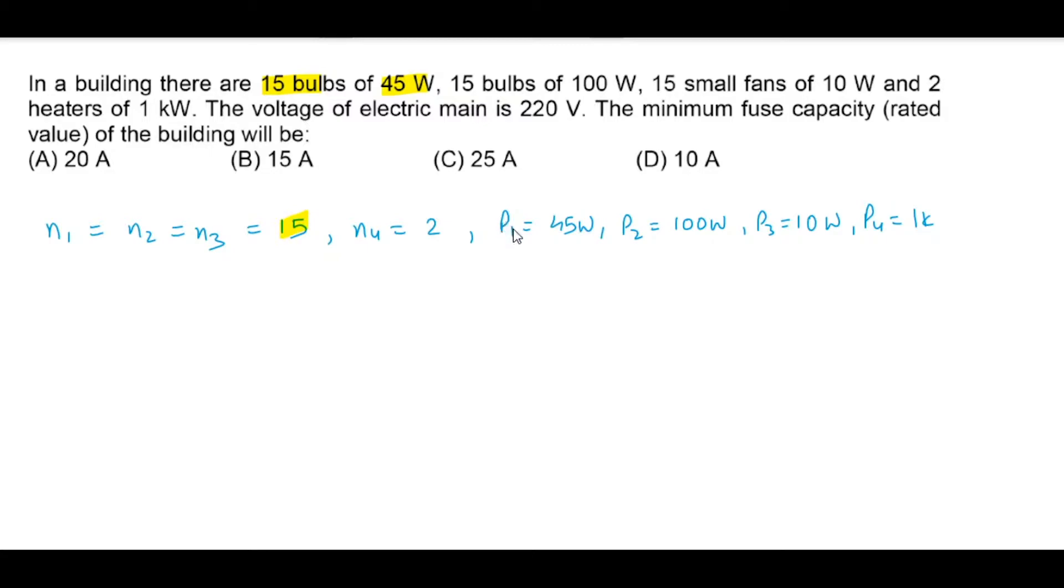So N1 is 15 and the power of the first kind of bulb is 45 Watt. 15 bulbs of 100 Watt. So N2 is again 15 and their power is 100 Watt. 15 small fans of 10 Watt. So again 15 and power is 10 Watt.